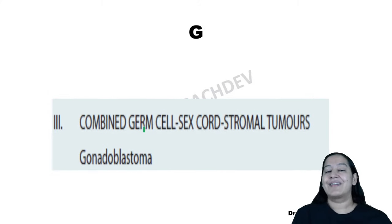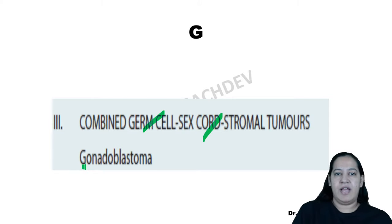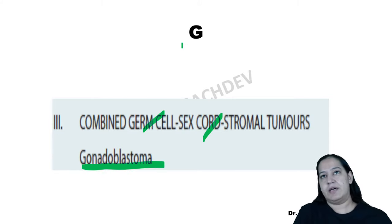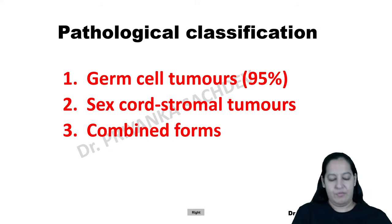The third category is combined germ cell and sex cord tumors — only one tumor here: Gonadoblastoma. So we have completed the pathological classification: germ cell tumors (7 types, mnemonic YESSPCT), sex cord stromal tumors (3 types, mnemonic LSG), and combined (gonadoblastoma).